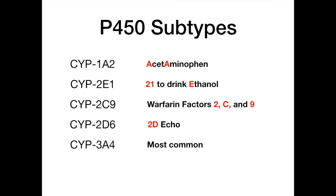So that's the P450 enzyme subtypes — 1A2, 2E1, 2C9, 2D6, and 3A4. Four beautiful mnemonics. We talked about P450 inhibitors and inducers: an inhibitor blocks P450, so other drugs build up and cause toxicity. A P450 inducer activates P450, which goes on to break down other drugs faster, giving those drugs a sub-therapeutic effect. P450 is really high yield, so spend some time with this video, watch it once or twice, and let me know in the comments if this was helpful.